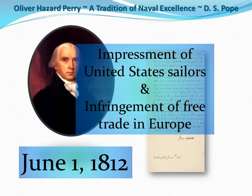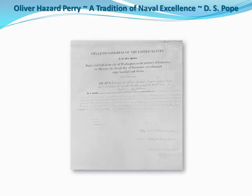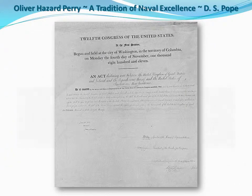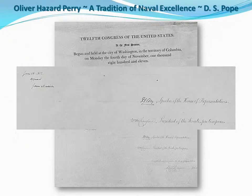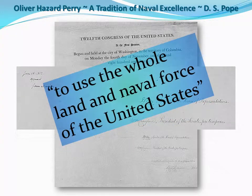Madison repeatedly cited the impressment of sailors and the infringement of neutral trade with Europe. On June 18, 1812, Congress declared war on Great Britain, authorizing the President to use the whole land and naval forces of the United States, and to commission — that is, hire — privateer vessels to serve as official Navy ships.